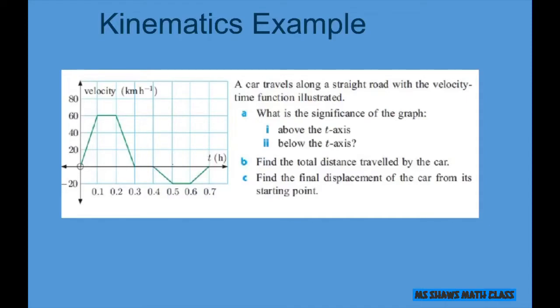What is the significance of the graph above the t-axis and below the t-axis? So if it's above the t-axis here, this area here, it means the velocity of our function v(t) is positive. If it's below the t-axis, it means our velocity v(t) is negative.